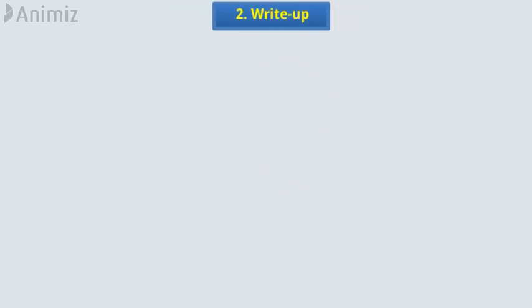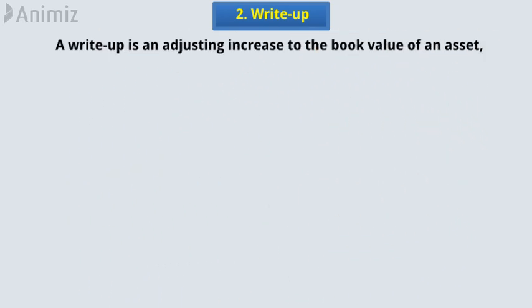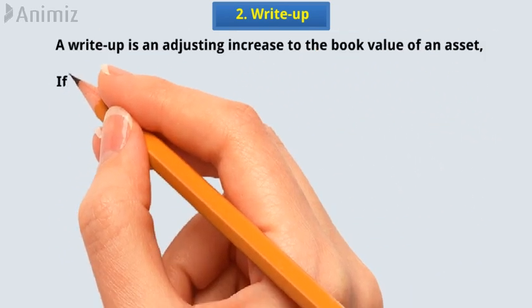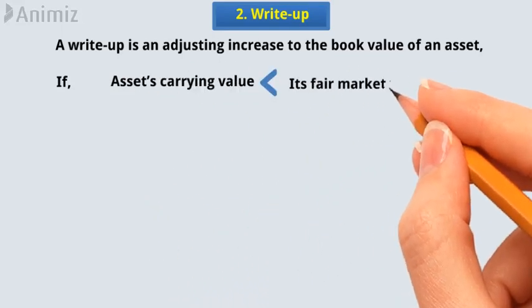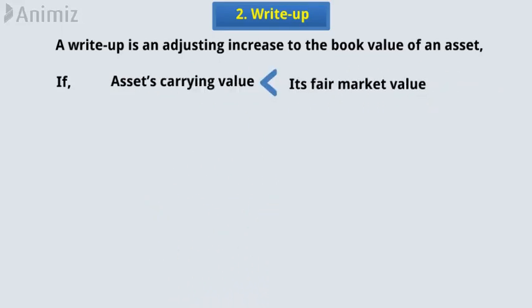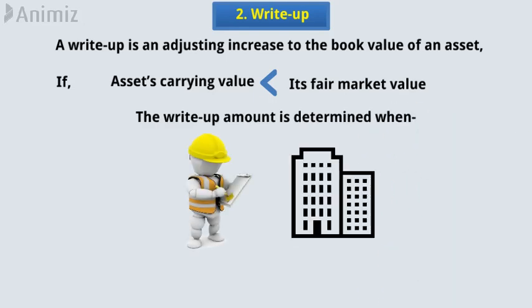Number 2: Write-up. A write-up is an adjusting increase to the book value of an asset that is made if the asset's carrying value is less than its fair market value. The write-up amount is determined when an independent business valuation specialist completes the assessment of the fair market value of assets of a target company.